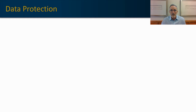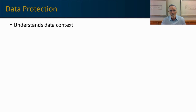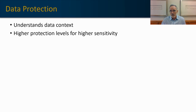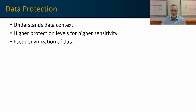The next use case for CASB is data protection. CASBs are designed to protect data as their fundamental purpose. They understand the context of the data, and they're smart enough — based upon your training of a CASB — to recognize personally identifiable information (PII), PCI information, healthcare information, and so forth. It can assign a higher protection level to sensitive data points, and it can also do some things in terms of data manipulation. The one used most frequently is pseudonymization of data.